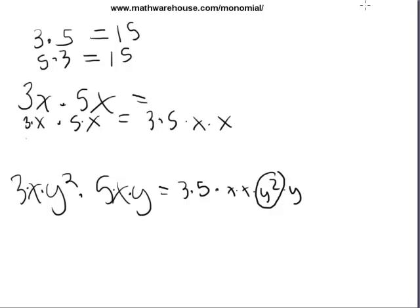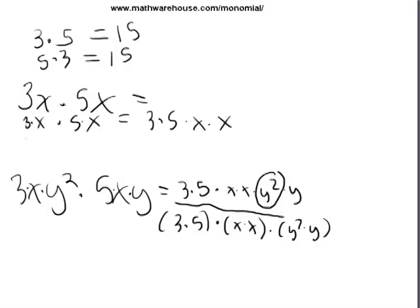They can also be grouped any way you want. We could take this term and write it as 3 times 5 times x times x times y squared times y. So when we're multiplying, we can rearrange any way we want, and we can group however we want. These are two key concepts for simplifying expressions like this.